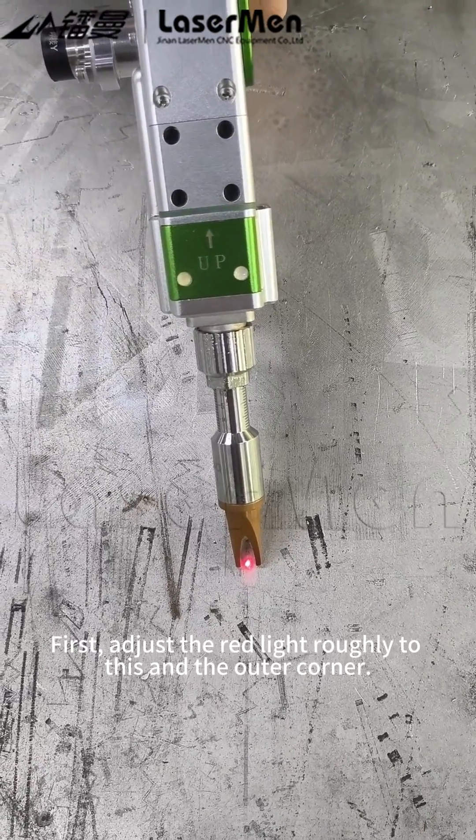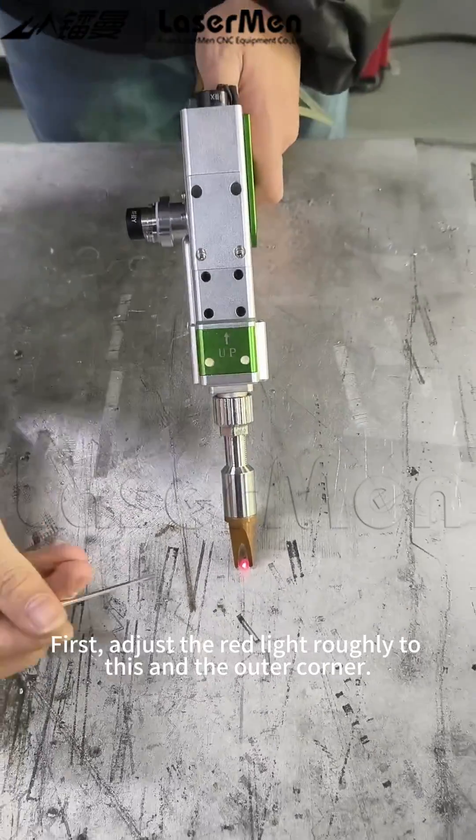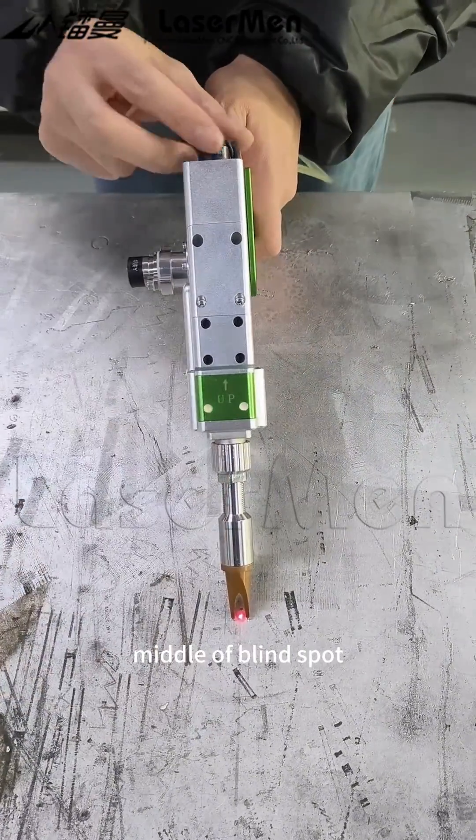We are the same. First, adjust the red light roughly to this end, the outer corner, middle of blind spot.